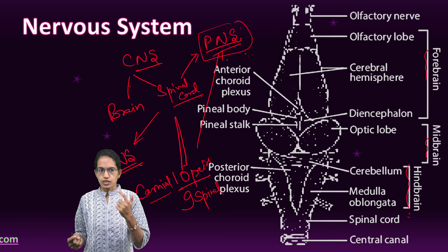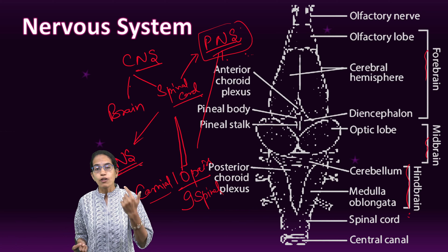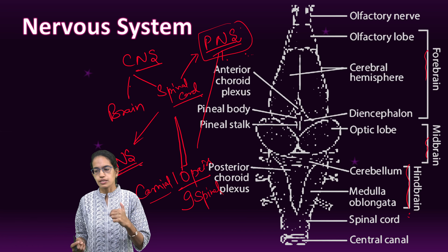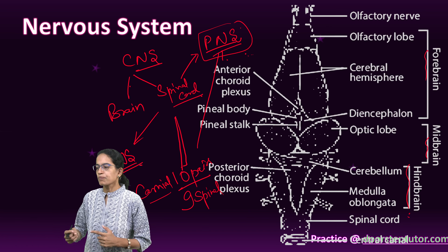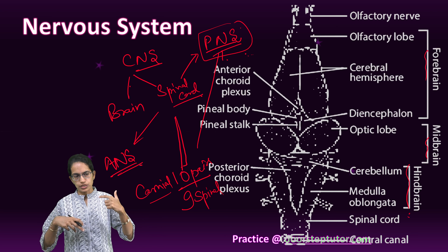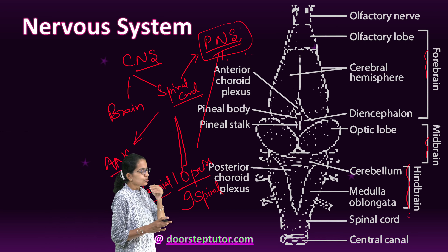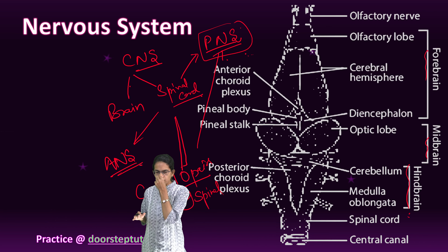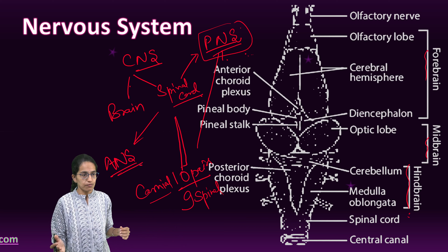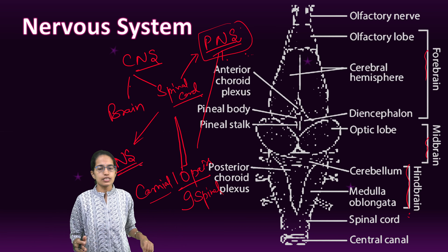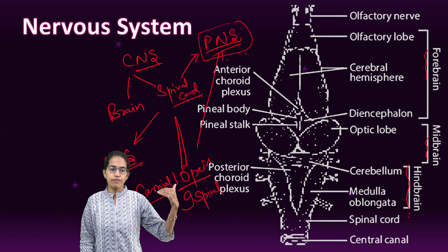The skin is the tangoreceptor, taste buds are the gustatory receptors. Then you have the nasal passages and external layers which are the olfactory receptors, ears which are the stato-acoustic receptors, and eyes which are the photoreceptors. So 5 different receptors are present, forming the complete sensory structure of the nervous system.